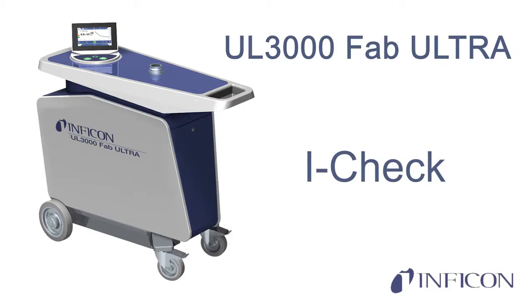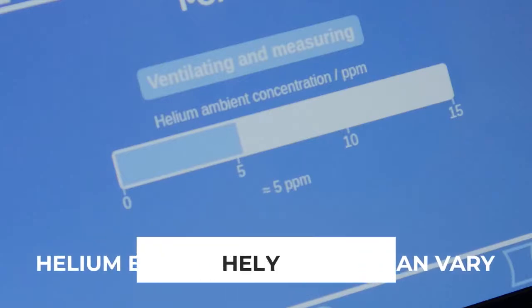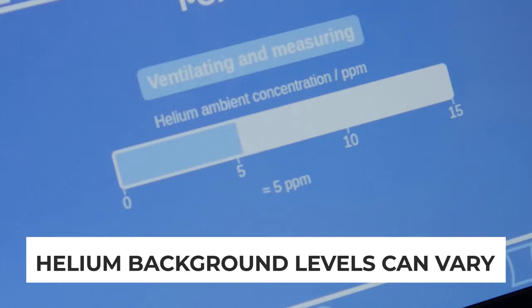This video will demonstrate how iCheck is used to check the helium background level of your environment. The natural content of helium in the ambient air is about 5.2 parts per million. Helium background levels in closed spaces can vary depending upon room ventilation and usage of helium inside.